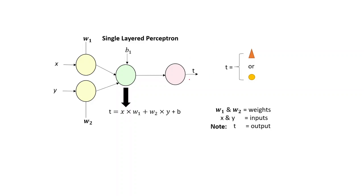And then you have one output layer which is represented as t. This output is calculated as t equals to X into W1 plus Y into W2 plus b. Well, it will be b1 according to the diagram.